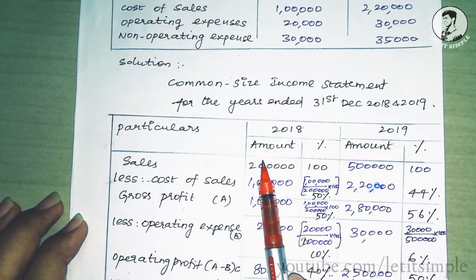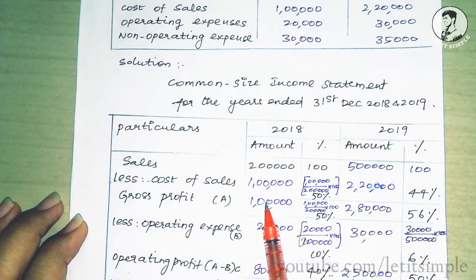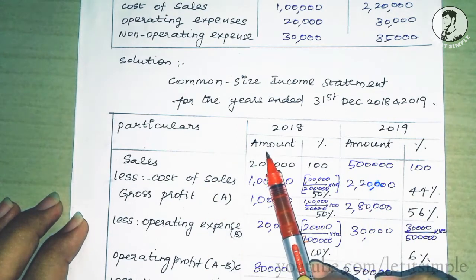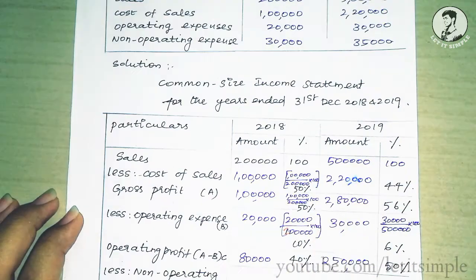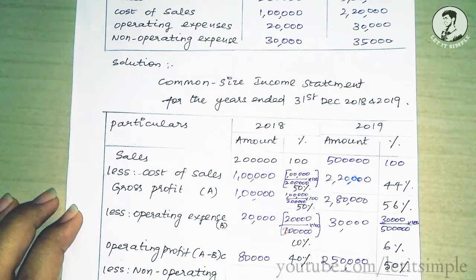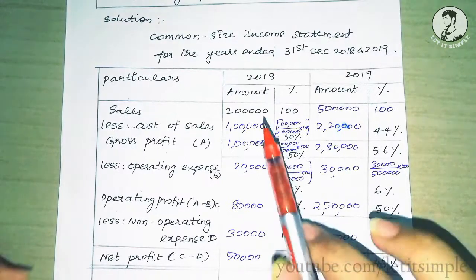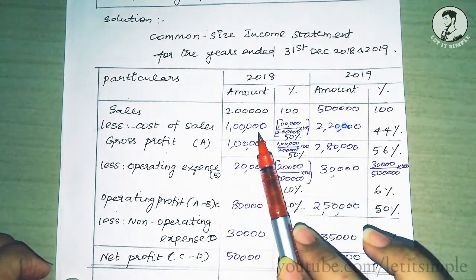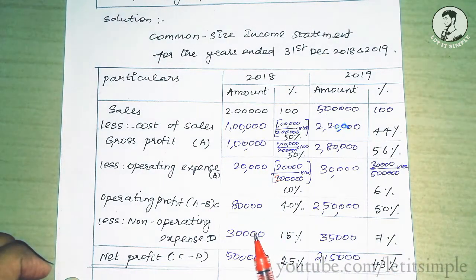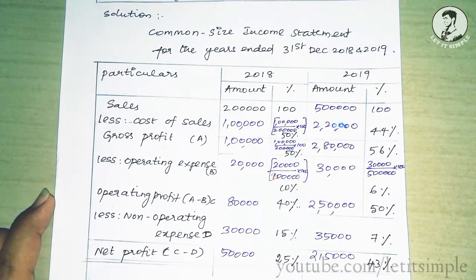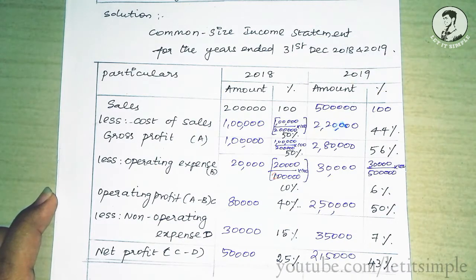Sales minus cost of sales: 2 lakhs minus 1 lakh equals 1 lakh. Then 1 lakh divided by 2 lakhs into 100 is 50%. We calculate total: less operating expenses from gross profit. Net profit: 2 lakh minus 1 lakh is 1 lakh; 1 lakh minus 20,000 is 80,000; 80,000 minus 30,000 is 50,000. 50,000 divided by 2 lakh into 100 equals 25%. This is how to prepare the common-size income statement. You can copy all the data and percentages. This is a vertical analysis.